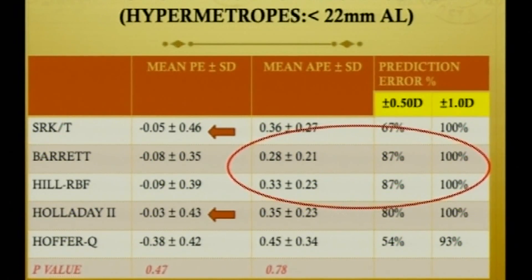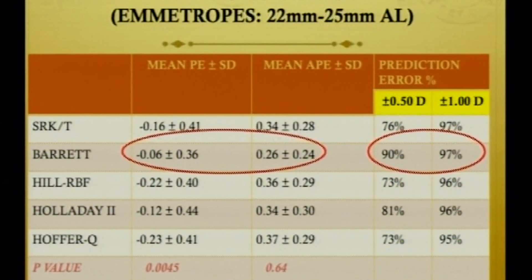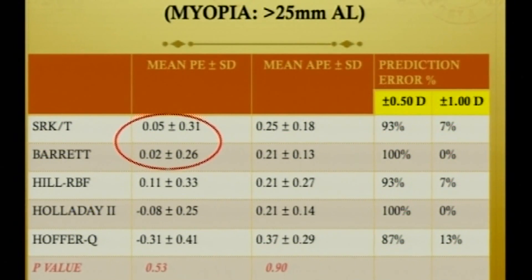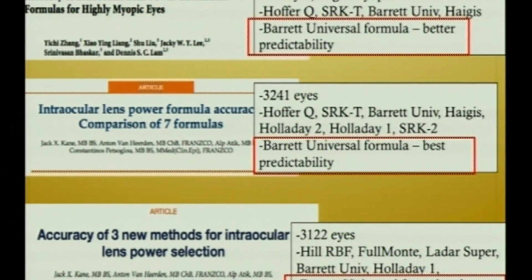100% of cases were between plus/minus 1 diopter in the SRKT, Barrett, Hill RBF, and Holaday II groups. For emetropic eyes, Barrett performed very well with the least prediction error, and 90% of eyes were within plus/minus 0.5 diopters, followed by SRKT and Holaday II. In myopes, SRKT and Barrett performed very well with the least prediction error, followed by Holaday II. 100% of eyes were within plus/minus 0.5 diopters in the Barrett and Holaday II groups. These results were comparable to recent studies showing Barrett Universal formula gives better predictability.